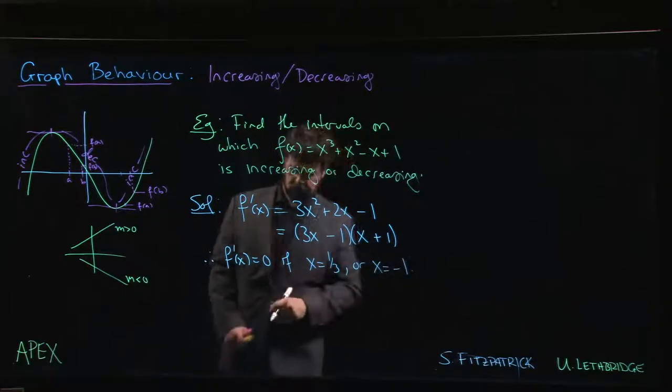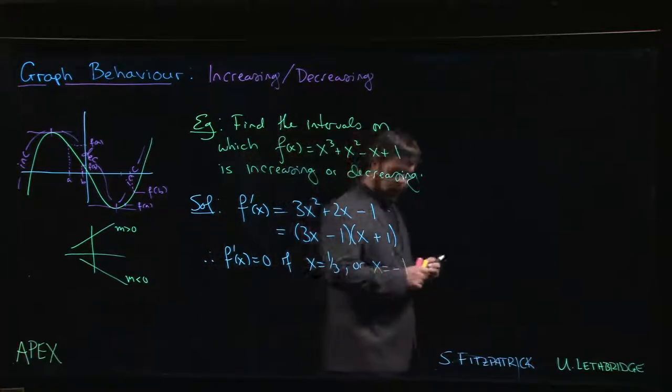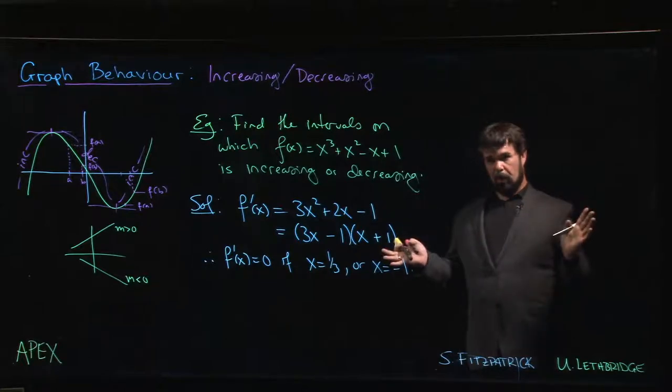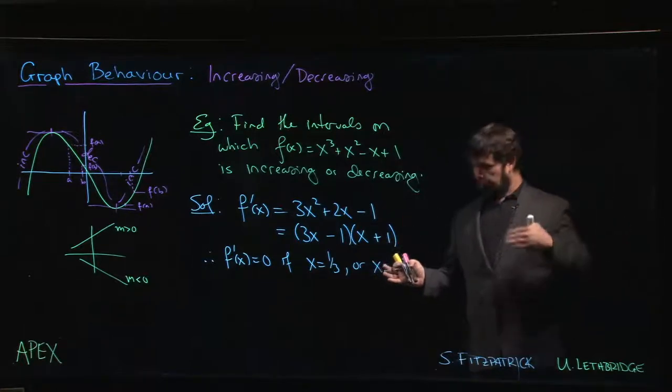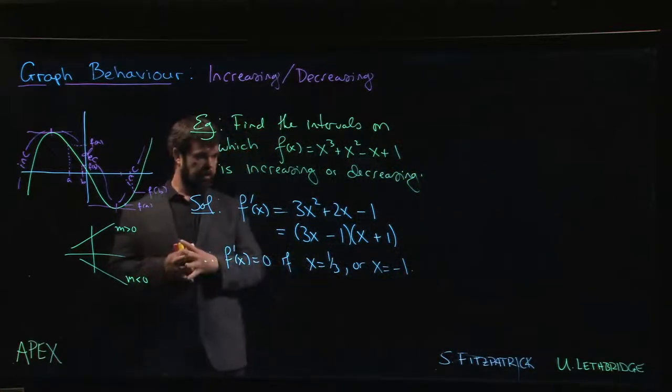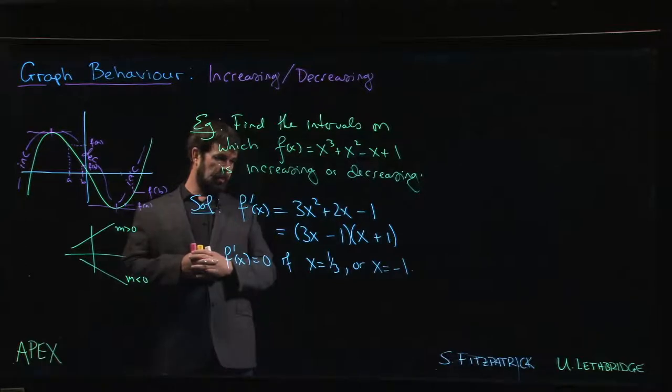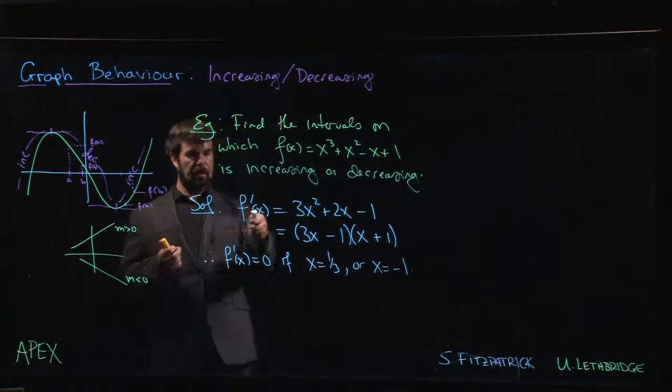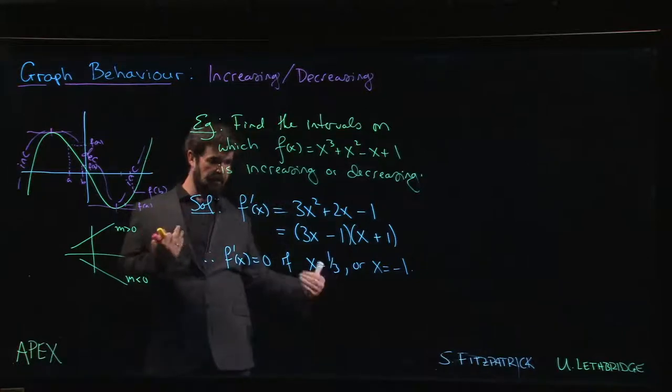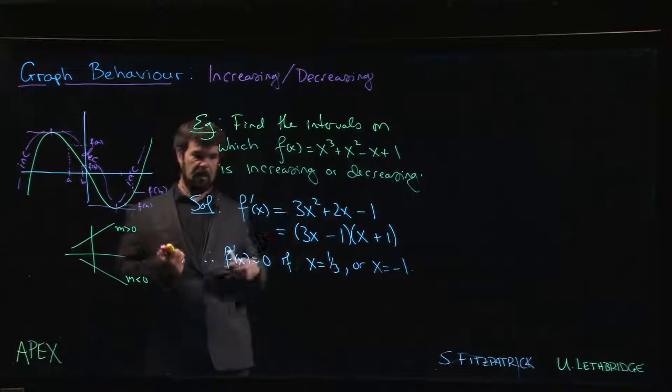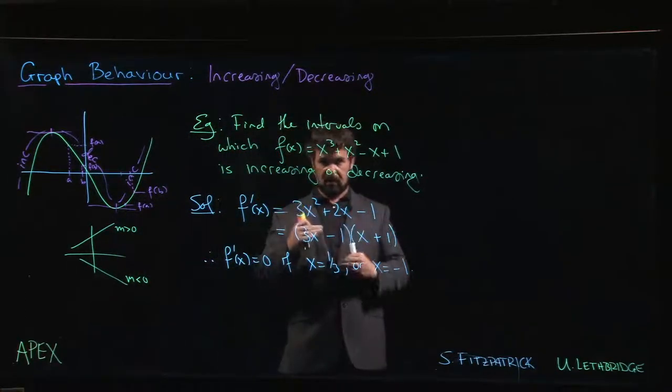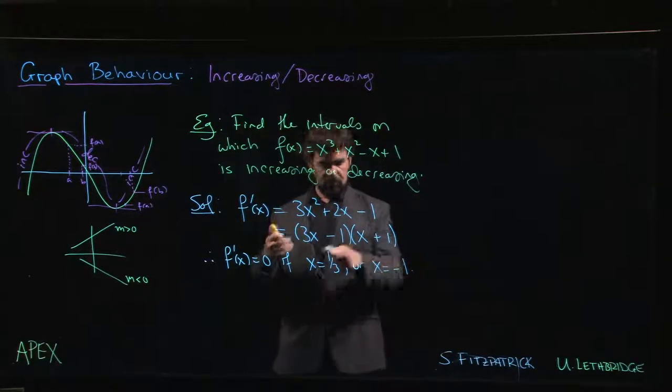Now, if you recall your Intermediate Value Theorem, the derivative is polynomial, it's continuous everywhere. There's nowhere that this derivative is undefined or even discontinuous. So we know that the only places where this function can transition from being negative to positive or back to negative are at the zeros. If the derivative switches sign from negative to positive or positive to negative, it has to do so at a zero.